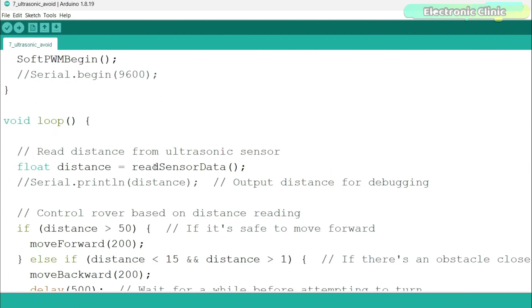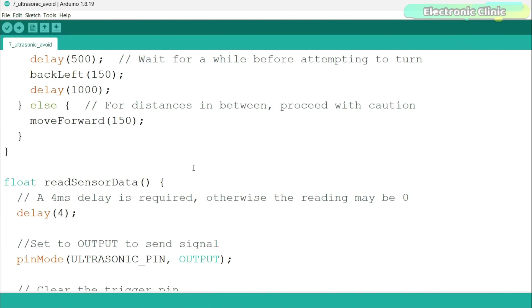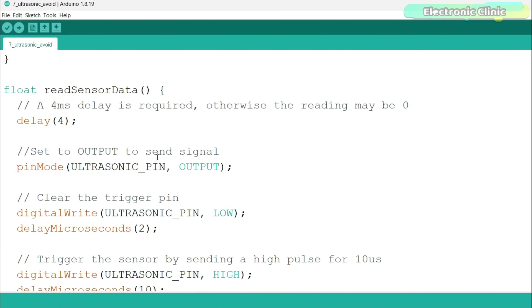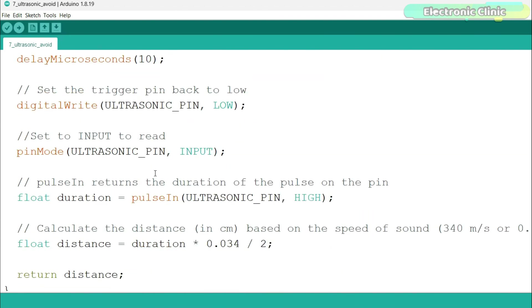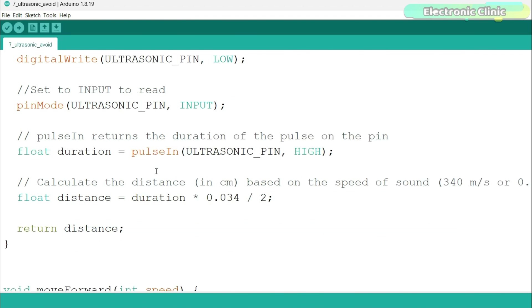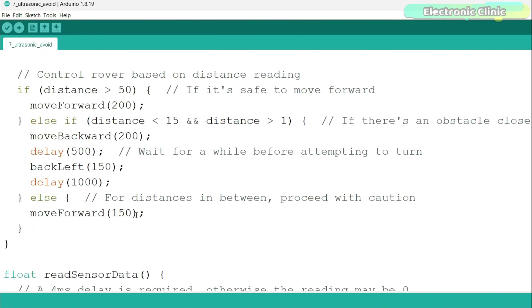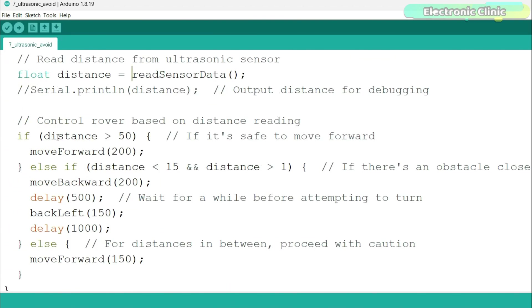First, we read the ultrasonic sensor. ReadSensorData is a user-defined function and its return type is float. You can see it consists of the same set of instructions I explained in example number 1. This time, it calculates the distance and then returns the final calculated distance.